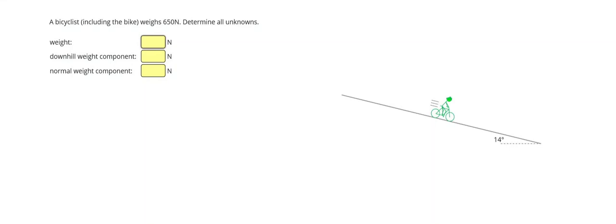A bicyclist, including the bike, weighs 650 N. Determine all unknowns. Alright, so in this problem we need to figure out the bicyclist's weight, how much weight is pulling down the hill, and how much weight is pulling into the hill.